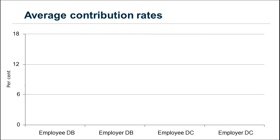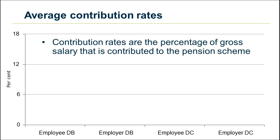Now we will look at differences between contribution rates in defined benefit and defined contribution occupational pension schemes in the private sector in 2009, using data from the Occupational Pension Scheme Survey. In this survey, contribution rates are the percentage of gross salary, excluding bonuses, that has been contributed to the pension scheme. Total contributions are made up of employee contributions and employer contributions.